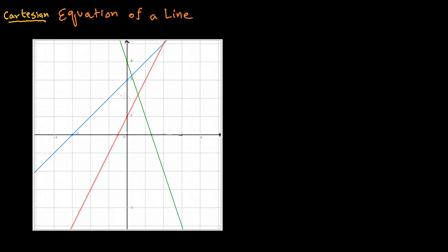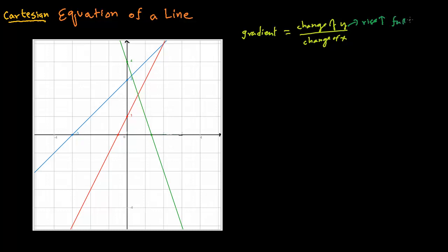In order to understand how to find the equation of a line, we need to understand the concept of gradient or slope. The gradient of a line is equal to the change of the y-axis divided by the change of x. That means how much does it rise or fall — rise if it goes up, or fall if it goes down — compared to how much it is running, meaning going forward. So that's another informal definition: rise over run or fall over run.